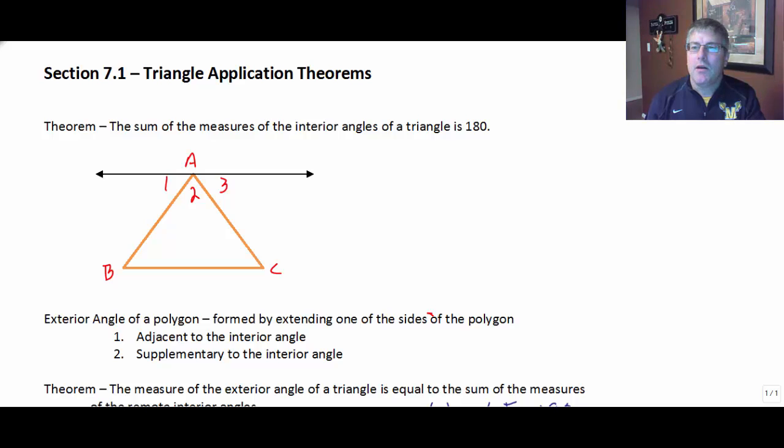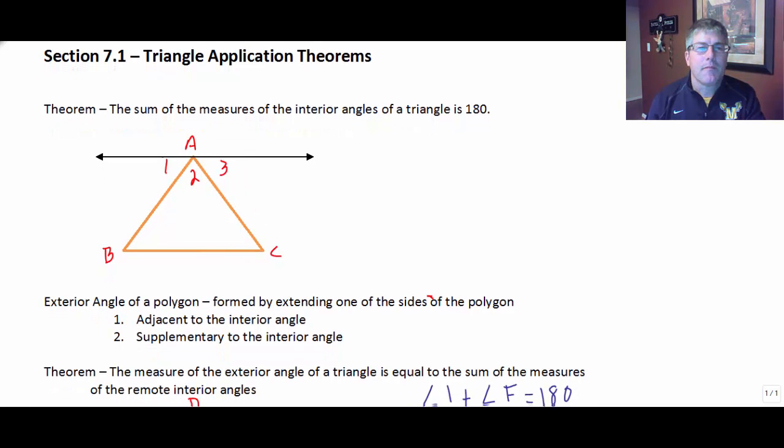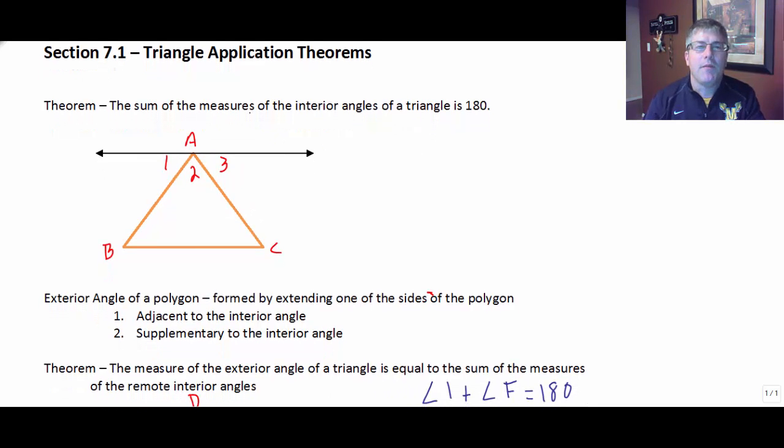So let's begin with our first theorem, the theorem that the sum of the measures of the interior angles of a triangle is 180 degrees. Now this may be something that you already knew coming into this. However, let's take a look at a proof of that.